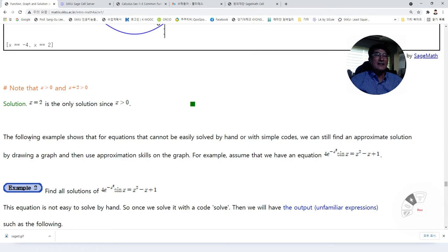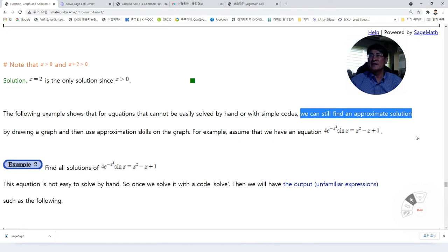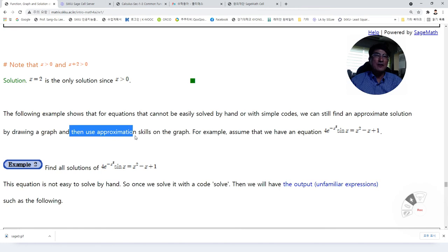The following example shows that for equations that cannot be easily solved by hand or with simple code, in that case, we can still find an approximate solution by drawing a graph and then use approximation skills on the graph.